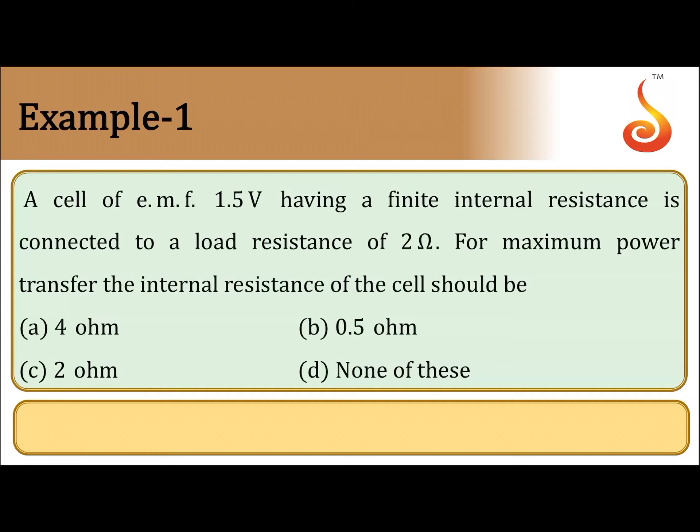Example number 1, a cell of EMF 1.5 volt having a finite internal resistance is connected to a load resistance of 2 ohm. For maximum power transfer, the internal resistance of the cell should be, options are 4 ohm, 0.5 ohm, 2 ohm, none of these.